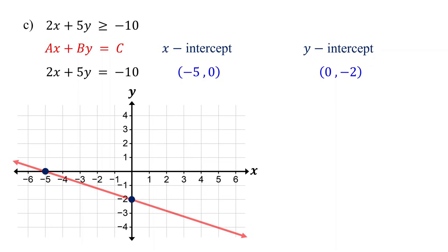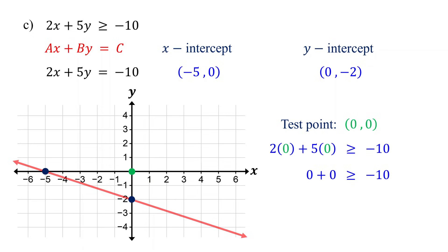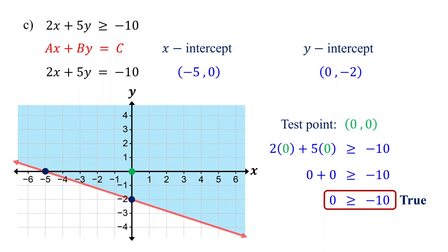If you need a refresher, check the links in the description. Next, to determine which region to shade, pick a test point that is not on the line. You can use 0 comma 0. Substitute it into the inequality and simplify. This is a true statement, so shade the region that contains the test point. That's your graph.